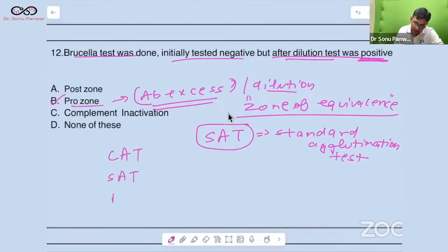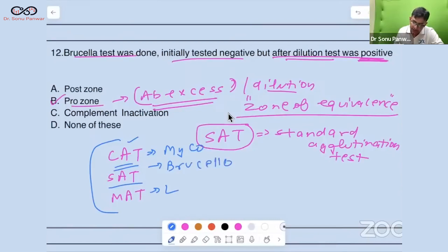The mnemonic you should know: a cat is sitting on a mat. CAT is Cold Agglutination Test for Mycoplasma, SAT is for Brucellosis, and MAT, Microscopic Agglutination Test, is for Leptospirosis.